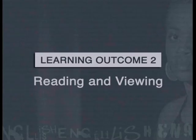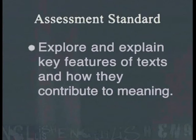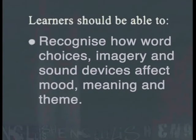The following lesson is linked to Learning Outcome 2, Reading and Viewing. It addresses the assessment standard that requires learners to explore and explain key features of texts and how they contribute to meaning. Learners should be able to recognise how word choices, imagery and sound devices affect mood, meaning and theme.